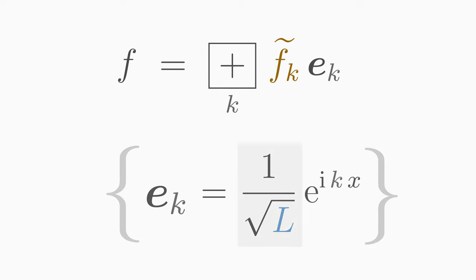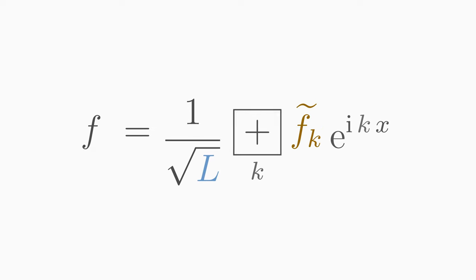A typical basis used in physics is the complex exponential functions (1/√L) × e^(ikx). The factor 1/√L ensures that the basis functions are normalized. For each different wave number k, you get a different basis vector. You may have seen another basis for the Fourier series, like cosine and sine — we are free to choose a basis. Here we choose complex exponentials because they can be written nicely and compactly, especially for explaining the Fourier series. The Fourier series in this basis of exponentials then looks like this.